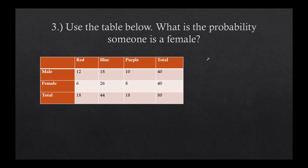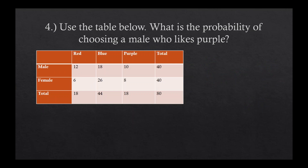We're looking at females over the total. There are 40 females and 80 total, so you get 0.5 or 50%. Very good.